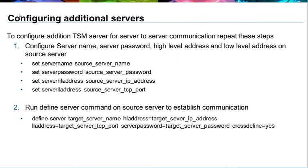If you have more than two servers and wish to configure additional servers for server-to-server communication, follow the same steps used for the target server. There is no need to change the source server as all configured parameters remain in place. On the next server designated as a source, set server name, server password, high-level address, and low-level address, then run the define server command providing the target server parameters. Verify connectivity by running the query server command; you should see an additional reference to the newly defined TSM server.